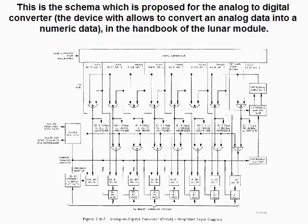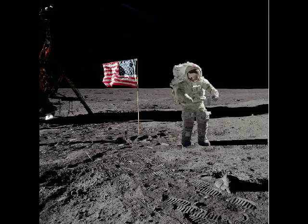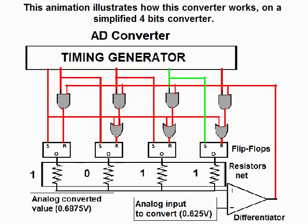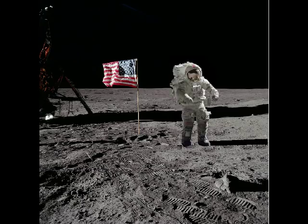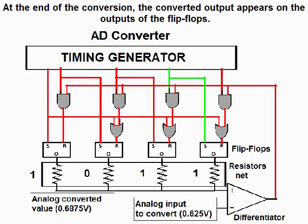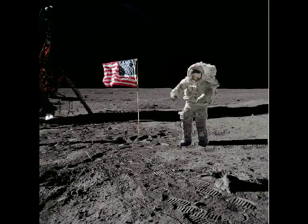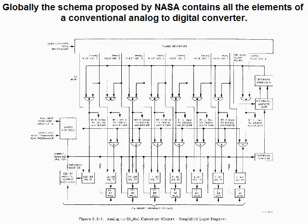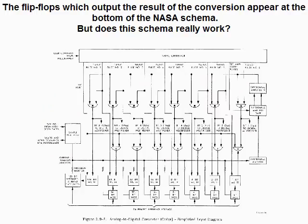This is the schema proposed for the analog-to-digital converter — the device allowed to convert analog data into numeric data — in the handbook of the Lunar Module. This animation illustrates how this converter works on a simplified 4-bit converter. At the end of the conversion, the converted output appears on the outputs of the flip-flops. Globally, the schema proposed by NASA contains all the elements of a conventional analog-to-digital converter, and the flip-flops which output the result of the conversion appear at the bottom of the NASA schema. But does this schema really work?